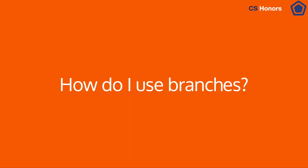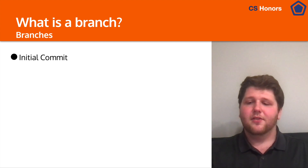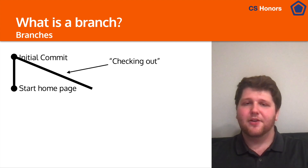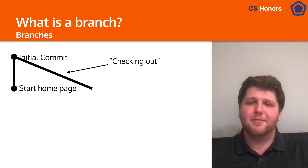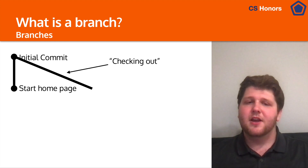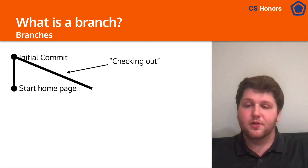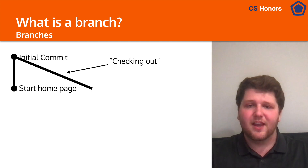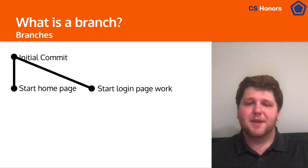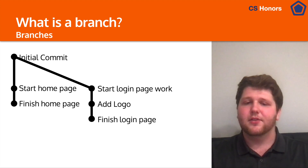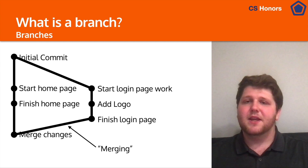So how do you use branches? Branches are really simple to work with. First, there's what's called checking out — telling Git that any new snapshots you make no longer apply to the branch you're already on. By default, you're on a branch called main. But you can check out to a new branch and then make your commits onto that branch instead. So you make a commit, and now you have a commit on a separate branch. You can add your logo, do everything else like normal, and then when you want to recombine, you merge the two branches together.